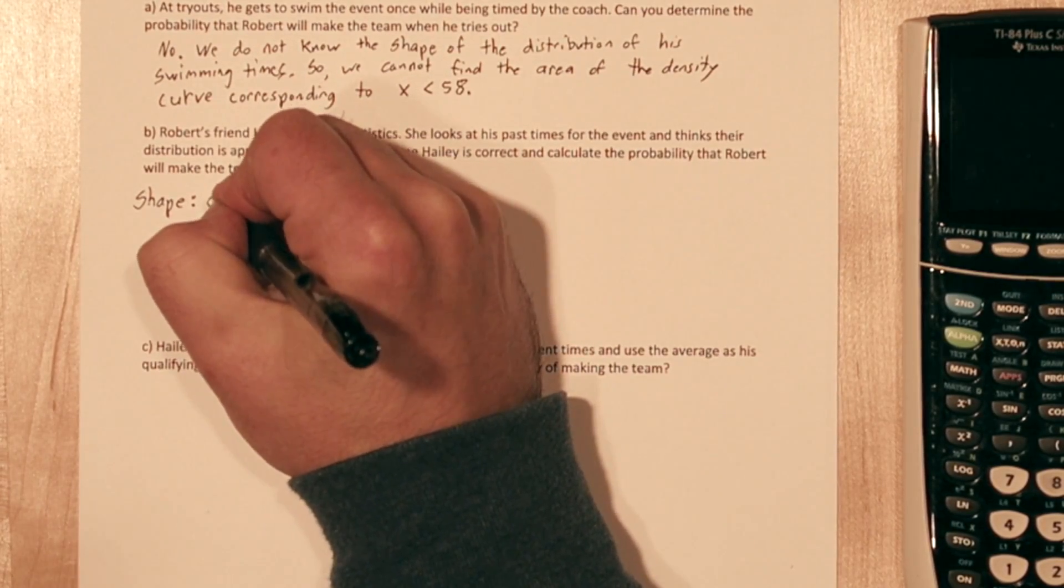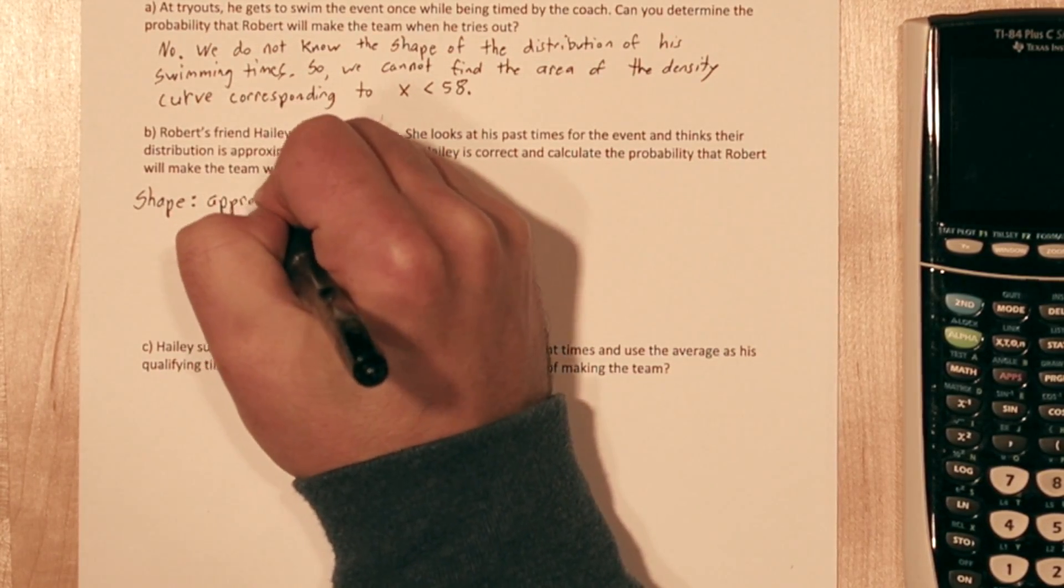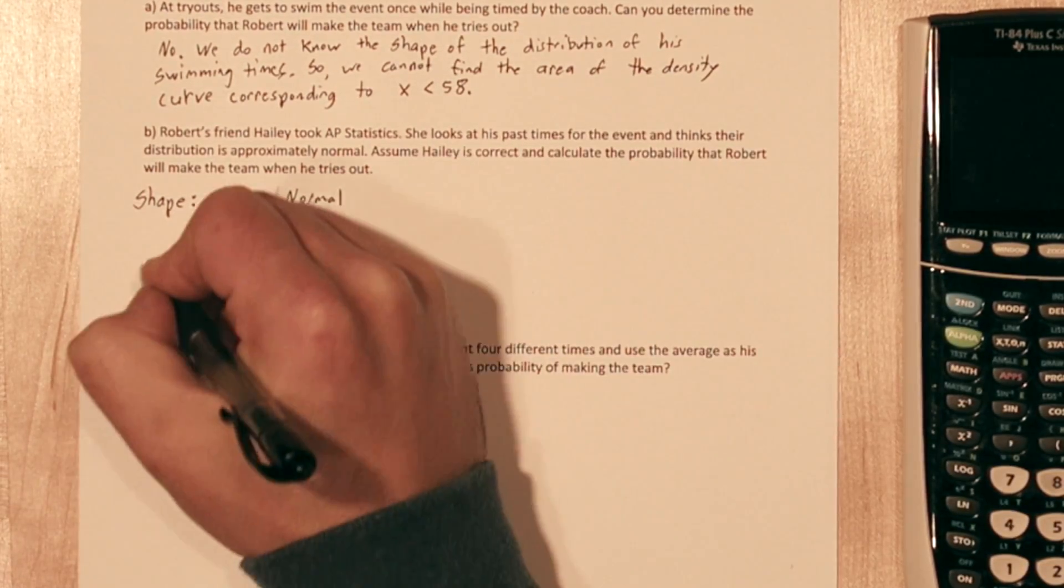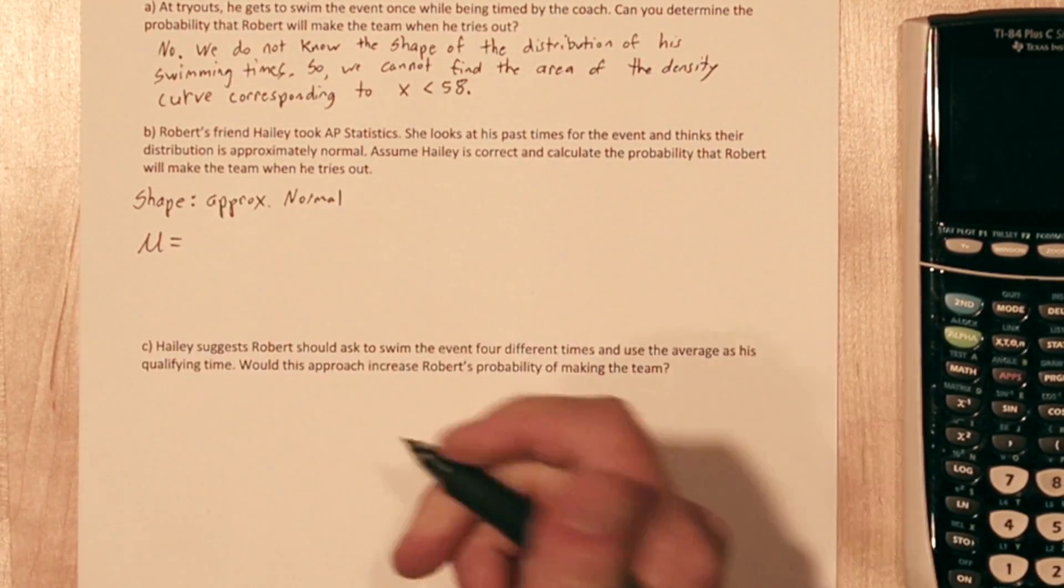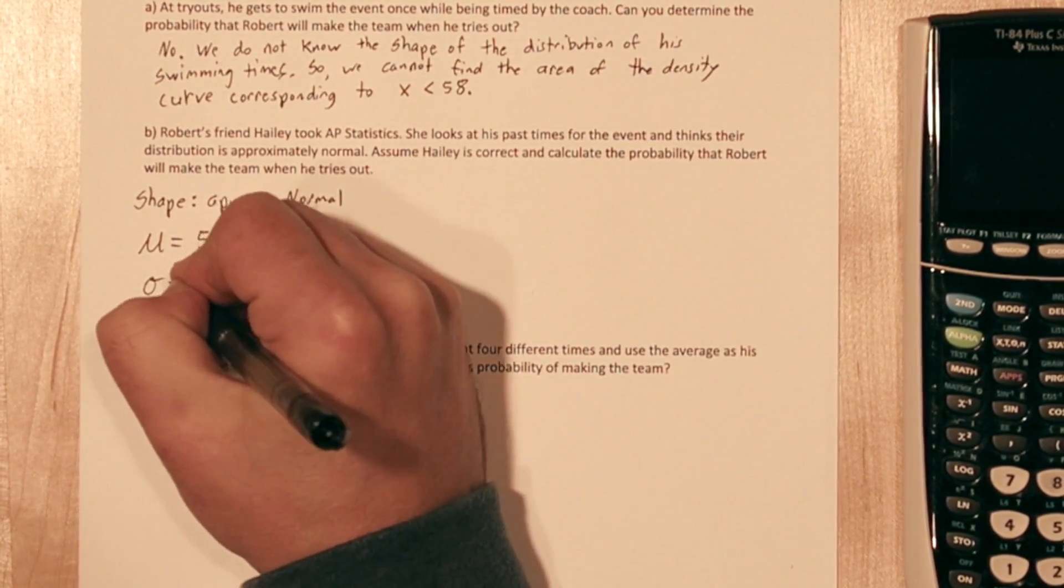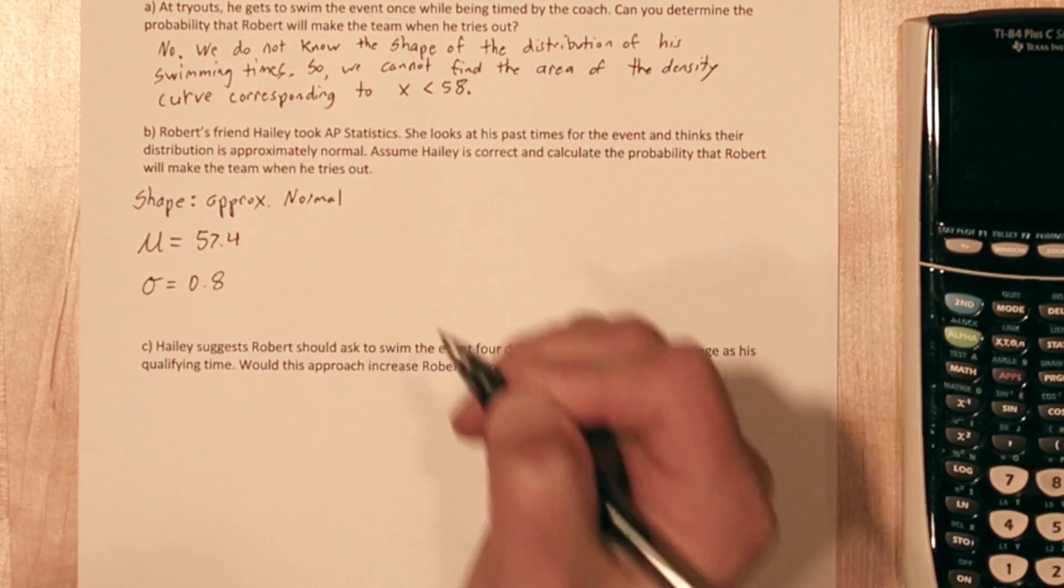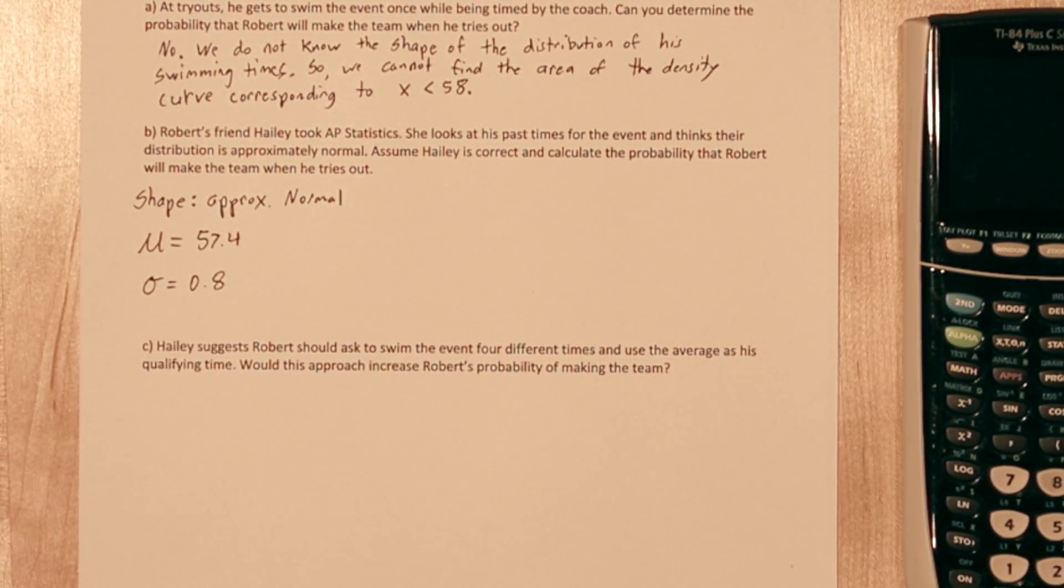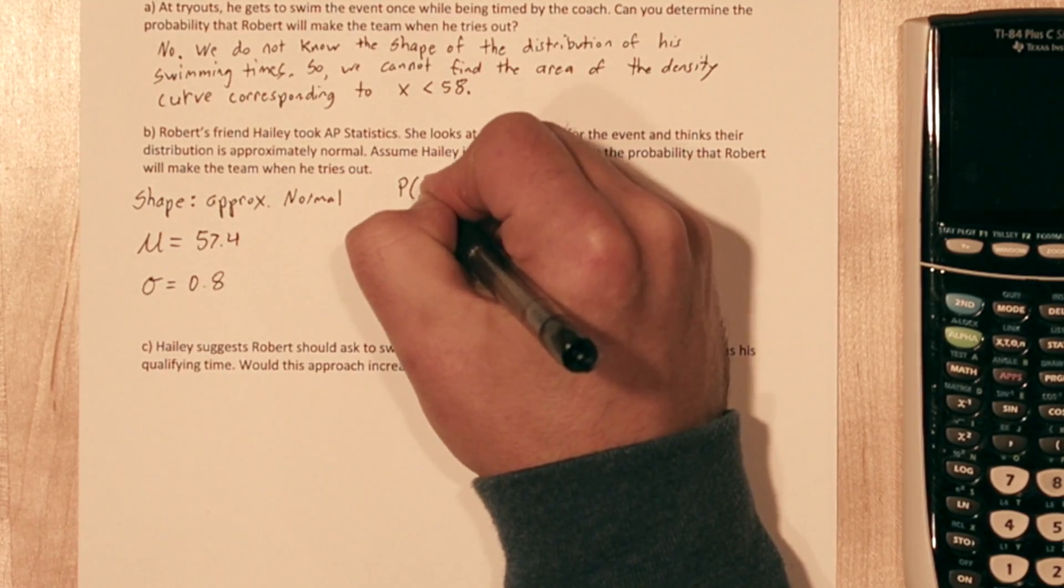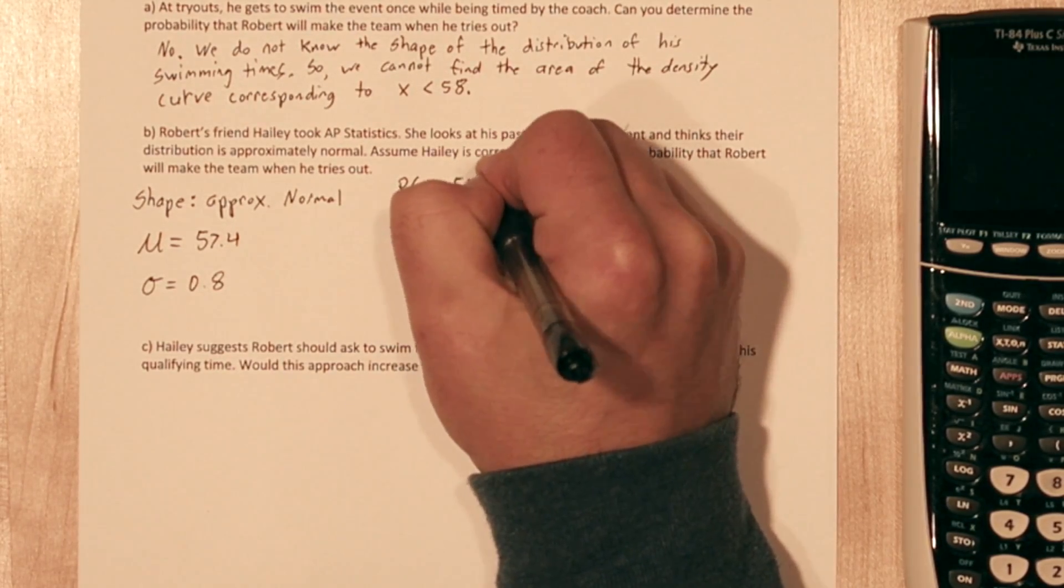If Robert's friend Haley is correct, then it provides the missing piece of the puzzle. We now know the shape of the distribution, or at least we're going to assume it's approximately normal. We also know the mean is 57.4 seconds, and the standard deviation is 0.8 seconds. Now we can figure out the probability of a swim time of less than 58 seconds, so one that would qualify him for the team.